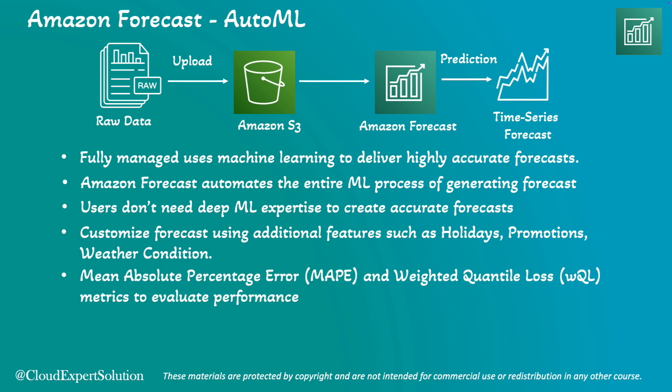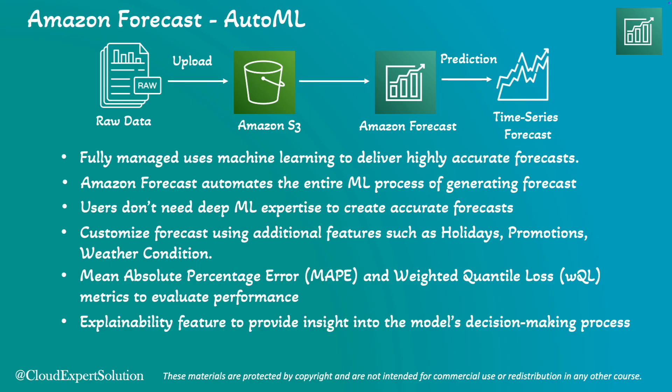Amazon Forecast provides accuracy metrics such as Mean Absolute Percentage Error (MAPE) and weighted quantile loss to help evaluate the performance of your forecasts. It also offers explainability features that help you understand how different factors influence your forecast, providing insights into the model's decision-making process.